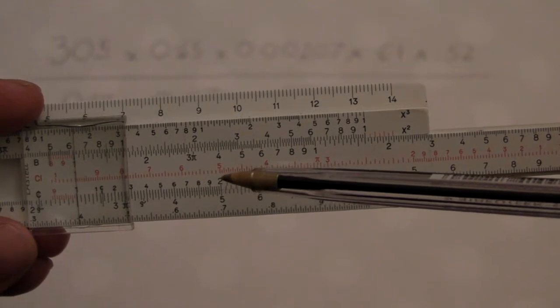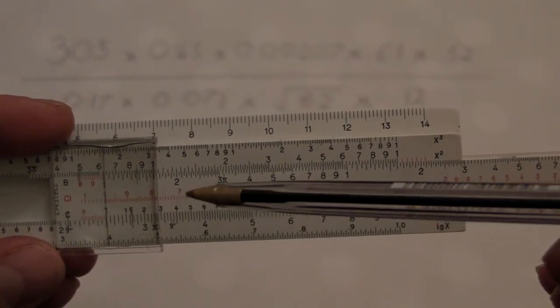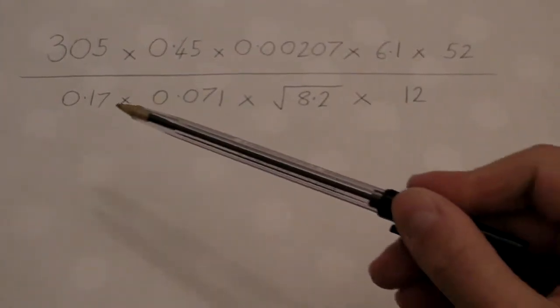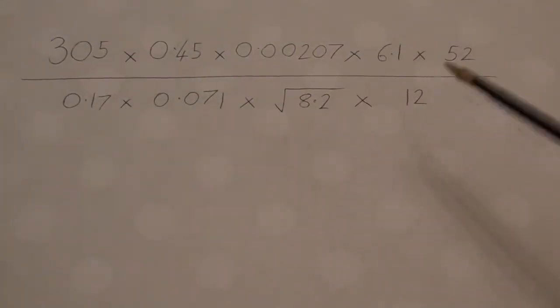5 divided by 2, find the answer there, times by 3 is 7.5. And we can use this to very quickly rattle through a series of calculations like this.